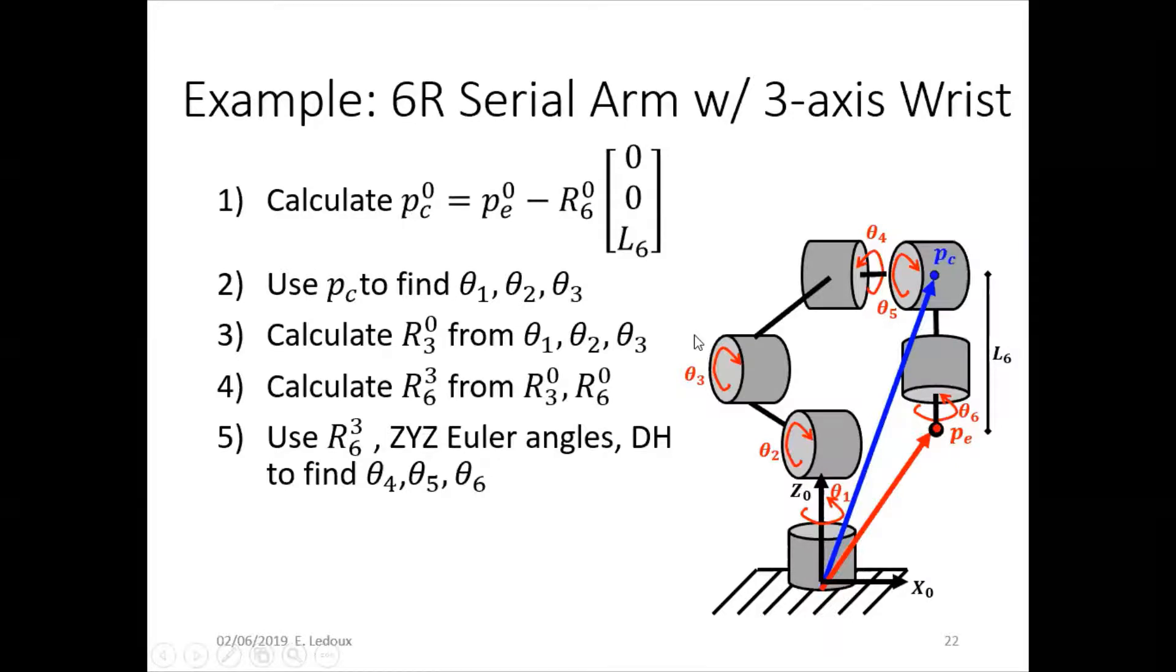After that, if you have theta 1, 2, and 3, you can calculate the rotation matrix that got you to the joint center. And then from there, if you know the final matrix, which you know from the transformation, and you know the rotation matrix that you just calculated to the wrist center, then you can get that rotation matrix that goes from joint 3 to joint 6 from those two. And then finally, use that rotation along with Euler angles and DH parameters to find theta 4, 5, and 6.